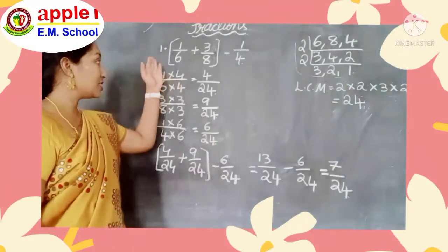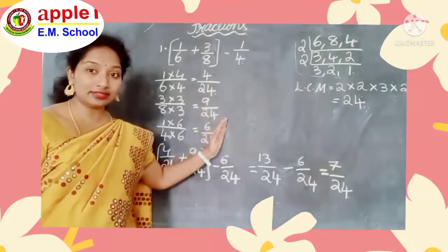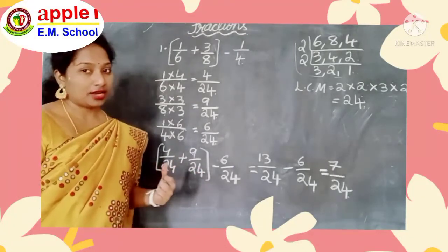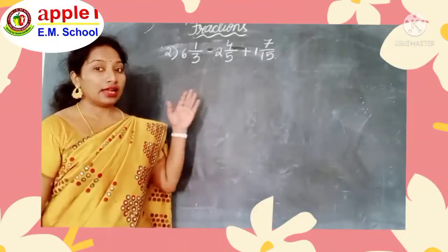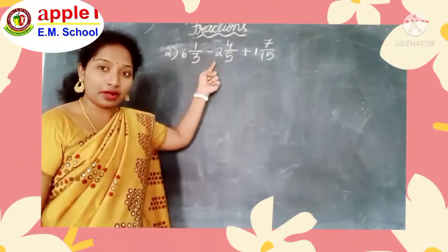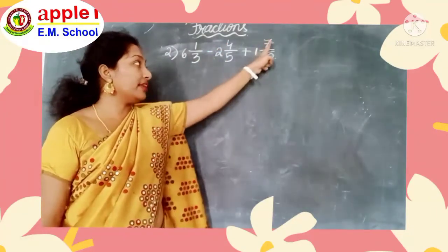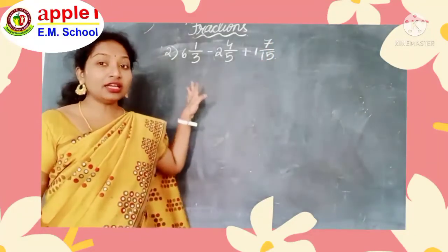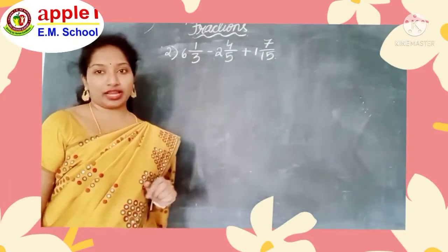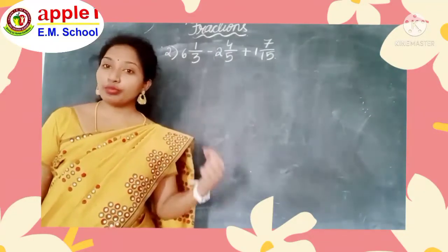So children, first make all the fractions like fractions by finding the LCM. Next, solve the numbers in the brackets first. Understood, children? Let us do one more simplification: 6 and 1 by 3, minus 2 and 4 by 5, plus 1 and 7 by 15. Here these are mixed fractions.